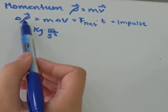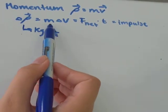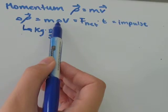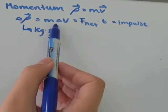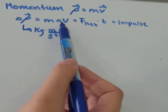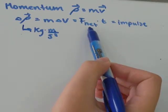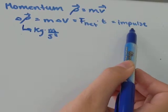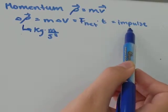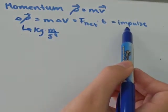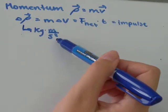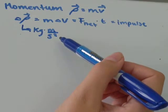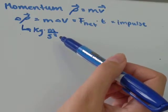The change in momentum is described as the mass times the change in velocity. The change in velocity would be the final velocity minus the initial velocity, and that's all equivalent to the net force times time, which we can call impulse. Momentum is measured in the units kilogram times meter per second, and then there would be a direction associated with that as well.